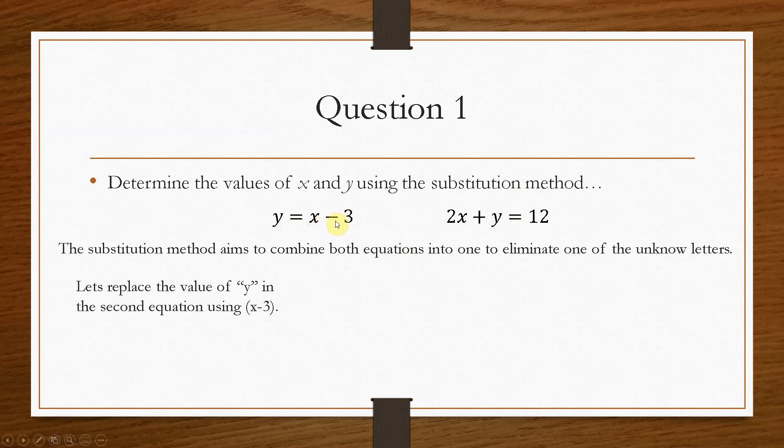So y equals x minus 3. If we replace this y with x minus 3, then the only unknown in the equation becomes x. You see we have eliminated the y. So then it becomes very straightforward. All we have to do is bring across the minus 3, so that will go over as plus. We can combine the 2x to give us 3x, and 15 where we get the 12 plus the 3. And then divide both sides by 3, and that will give us a value of x of 5.